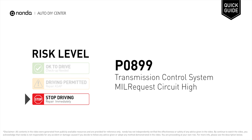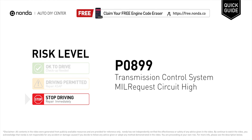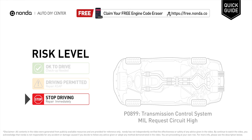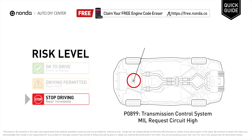P0899 is a diagnostic trouble code for transmission control system — function indicator lamp request circuit high. Under this circumstance, stop driving and repair your vehicle immediately. It means there is an error in the transmission control system in which the transmission control module cannot communicate with the engine computer.